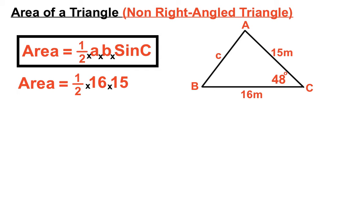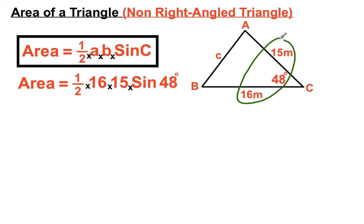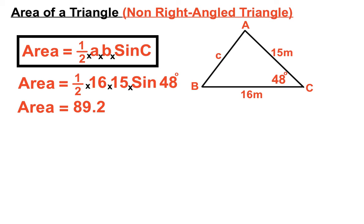When multiplying, the order doesn't actually matter, so we could have those sides around the other way and still get the correct final answer. For sine c, the values after sine, cosine, and tan are angles — the only angle in the whole question is 48 degrees. So we have two sides and the included angle. We put them all in the right spots, type it into our calculator, and successfully get an answer of 89.2.